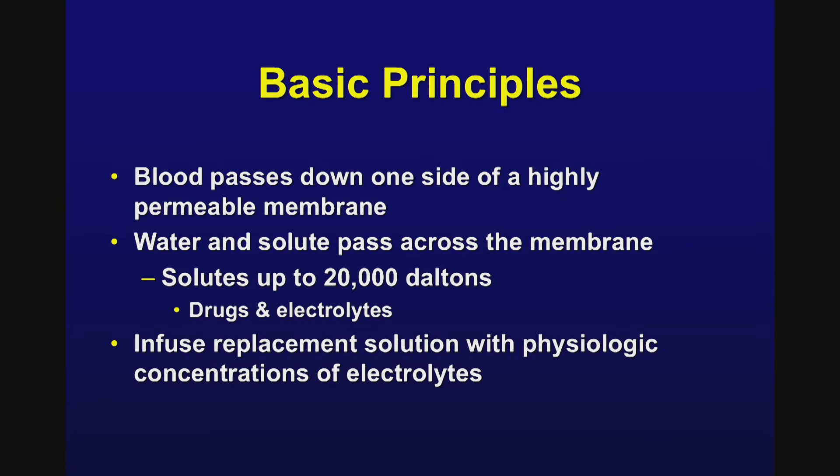The basic principle is that blood passes down one side of a highly permeable membrane, and water and solute pass across the membrane into an ultrafiltrate collection vessel. Solutes up to 20,000 Daltons can easily be removed via CRRT. Most drugs and electrolytes are within this range, so they're easily removable during this process. Replacement solutions with physiologic concentrations of electrolytes can be infused to keep the patient relatively stable from a metabolic standpoint.